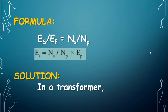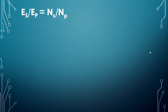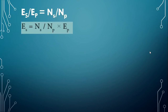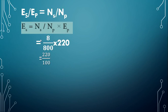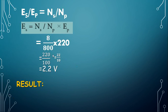Solution: In a transformer, ES by EP is equal to NS by NP. Therefore ES equals NS by NP into EP. Substituting: NS is 8, NP is 800, EP is 220. Dividing 8 by 800 gives 1 by 100. Multiplying 1 by 100 and 220 gives 220 by 100. Cancelling the zero gives 22 by 10, which equals 2.2 volt. Result: the output voltage is 2.2 volt.